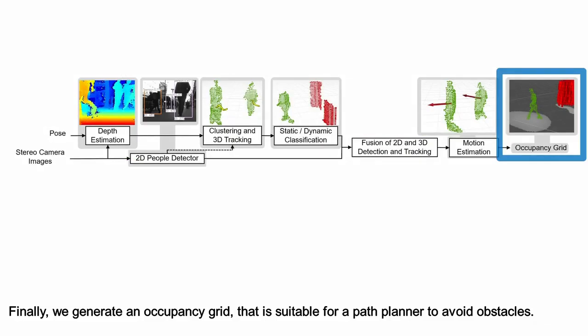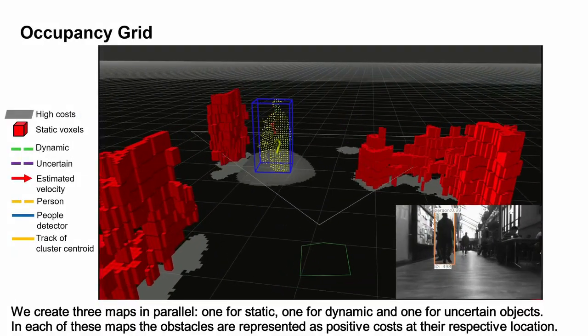Finally, we generate an occupancy grid that is suitable for a path planner to avoid obstacles. We create three maps in parallel.